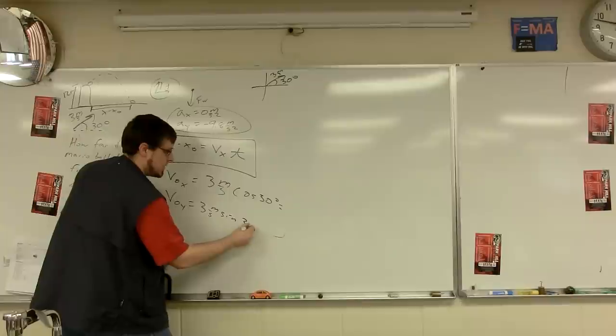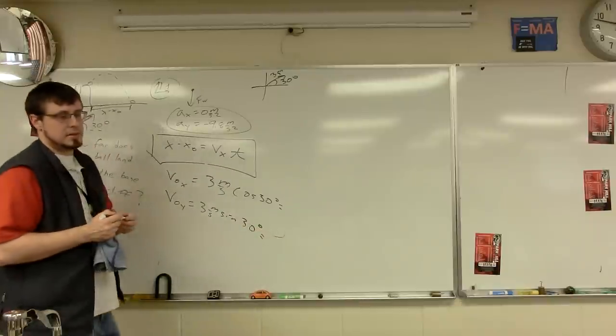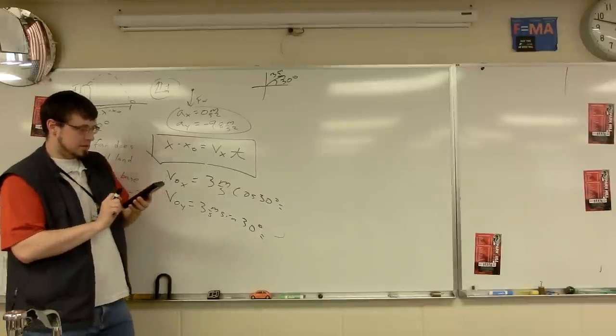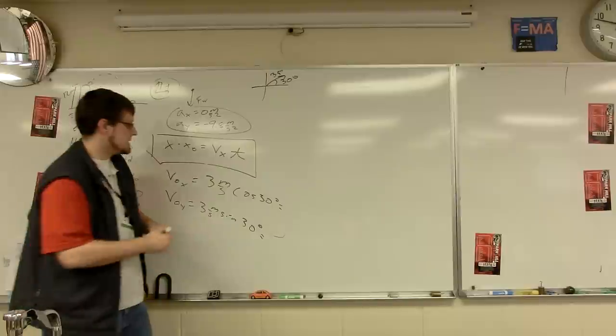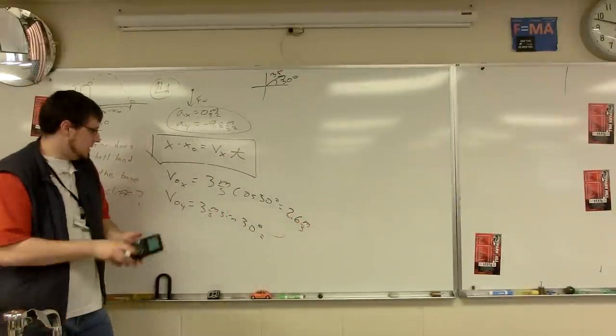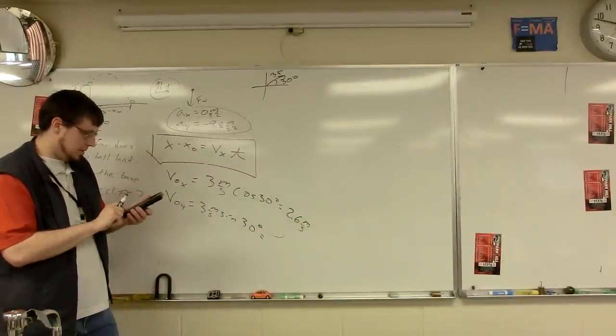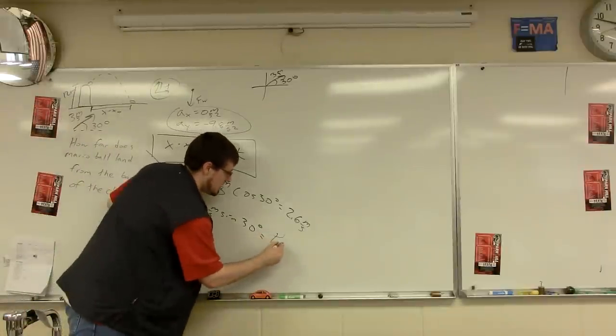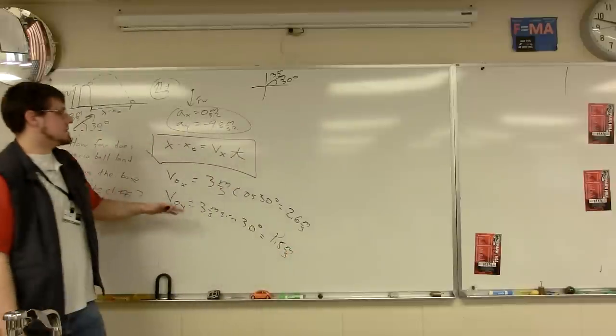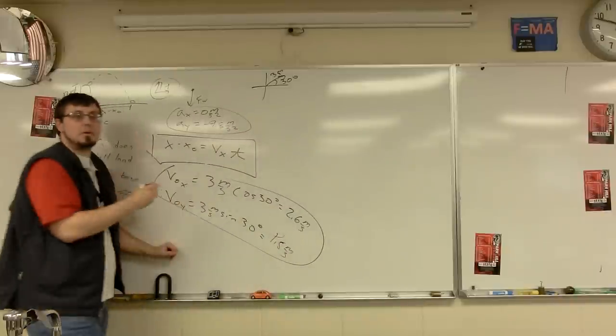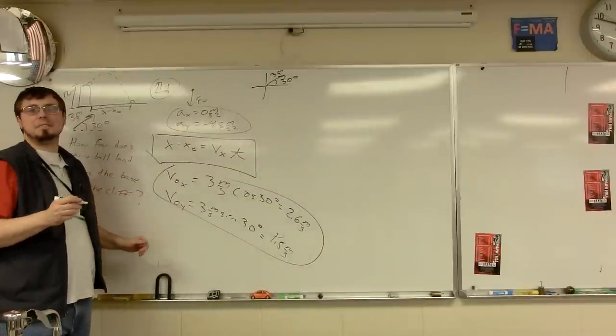V naught in the Y will be 3 sine 30. Trig, people. You want to draw the triangle real quick? Feel free. Trust me, you'll get it figured out. Anybody else get 2.6? Yeah. Okay. 2.6. And our Y component. 1.5? Make sure that makes sense. 30 degrees, so the X should be bigger than the Y. Sounds good. Somebody else confirm both of those, Josh? Yeah.